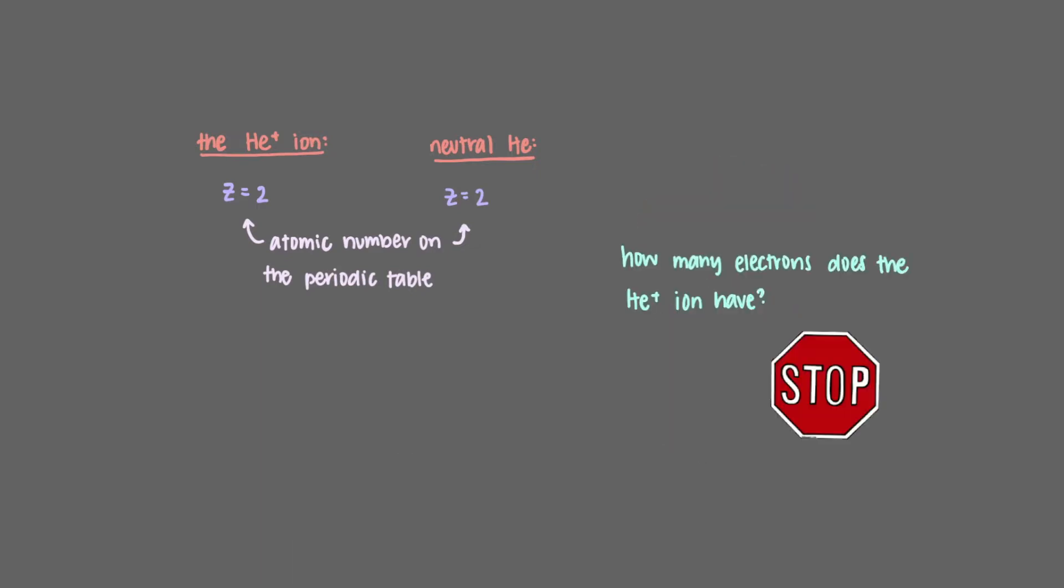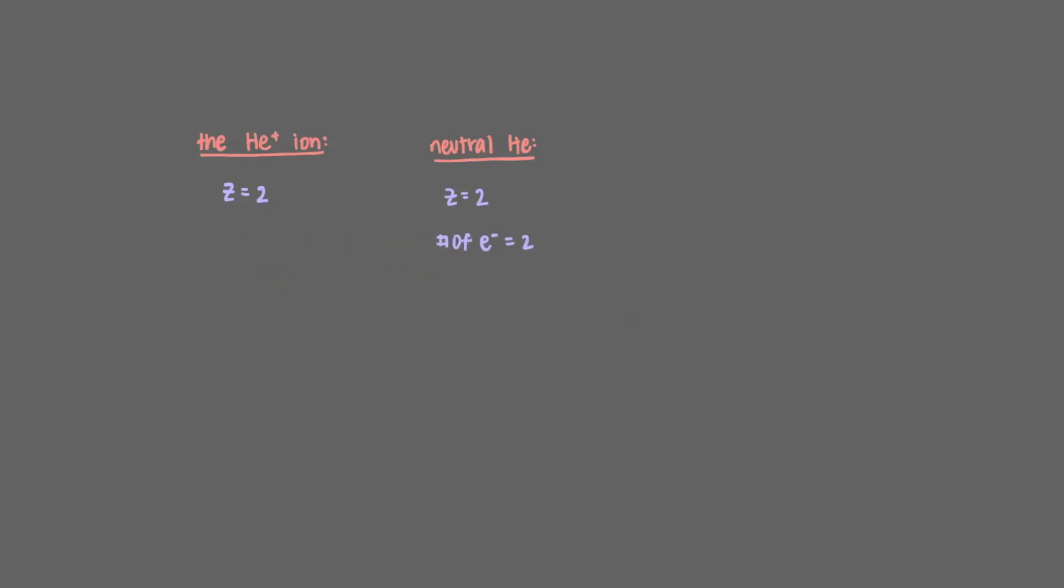How many electrons does the helium plus ion have? That's right, despite the neutral helium atom having two protons and two electrons, the helium plus atomic ion has lost one of its electrons and so it's a one-electron species.